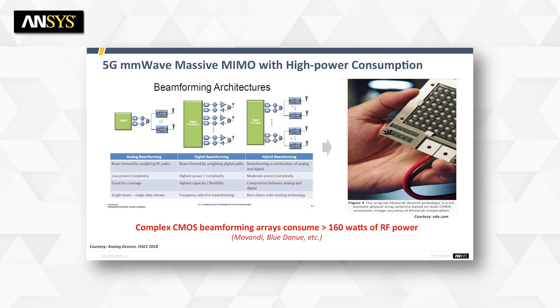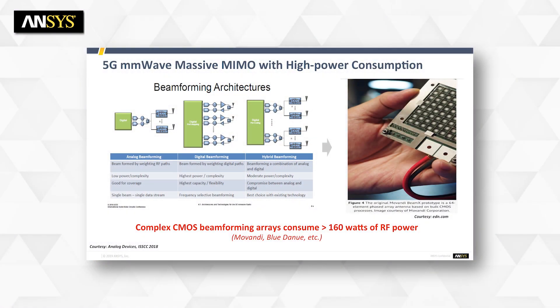Beamforming is a critical component for 5G design. There are various trade-offs — analog design, hybrid design, and full digital design — depending on whether you place beamforming on an SoC or a separate RF chip in a 3D IC. Some start-ups like Movendi and Blue Danube designing massive MIMO systems consume more than 100 watts. With 5G operating at high frequency, there are significant signal interference, EM issues, and thermal challenges for these high-power devices.